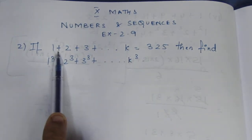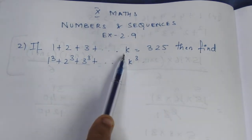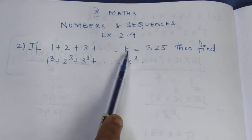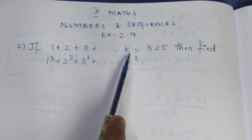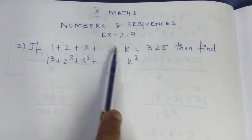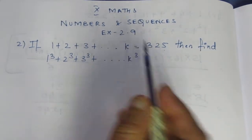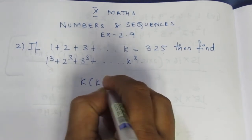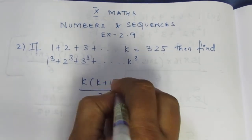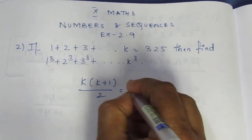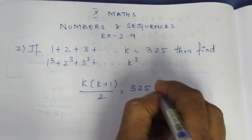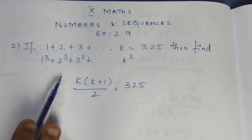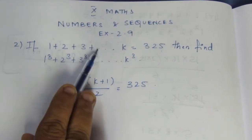If you look at the sum of natural numbers up to k, we have a formula: n(n+1)/2. So k(k+1)/2 is equal to 325. Now we need to find this using that formula.